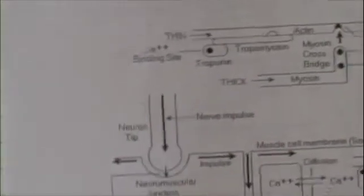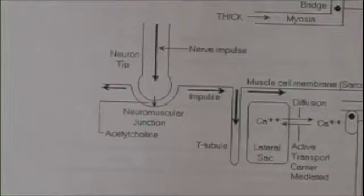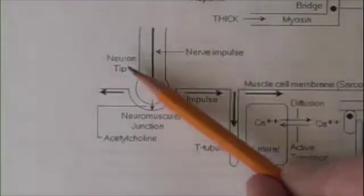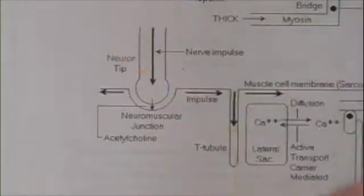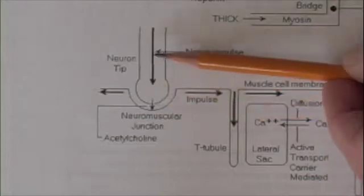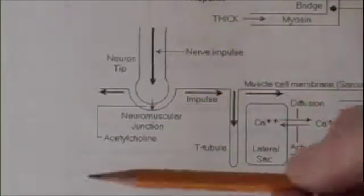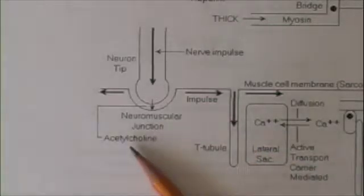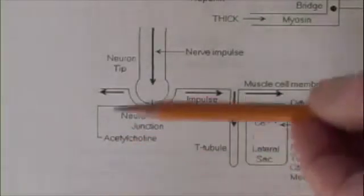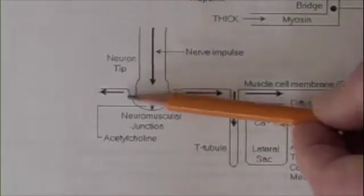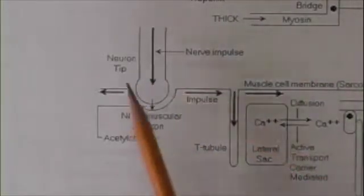Now here's what happens. A nerve impulse travels down the axon of a neuron. When it reaches the tip of the neuron, a signal molecule is released. This signal molecule is called acetylcholine. It quickly crosses the tiny gap and comes in contact with the muscle cell membrane.